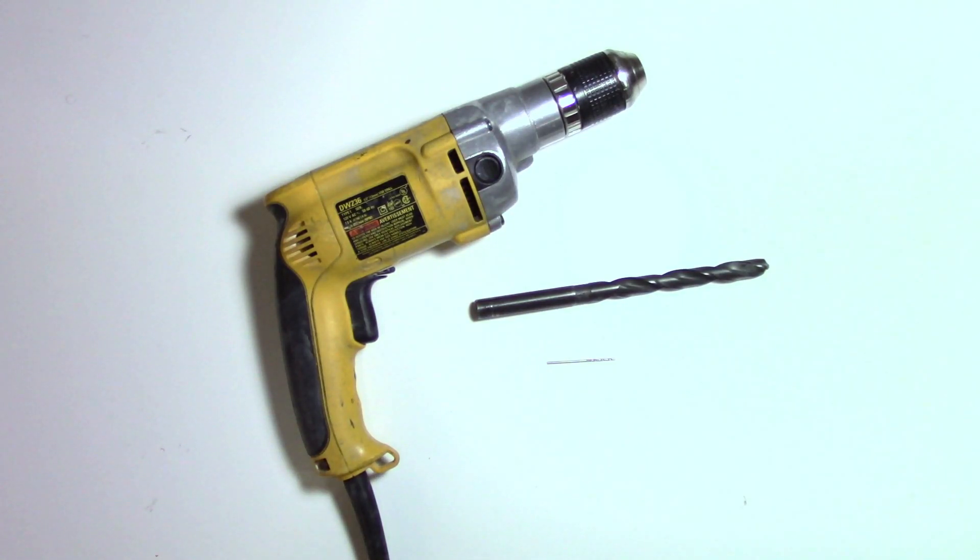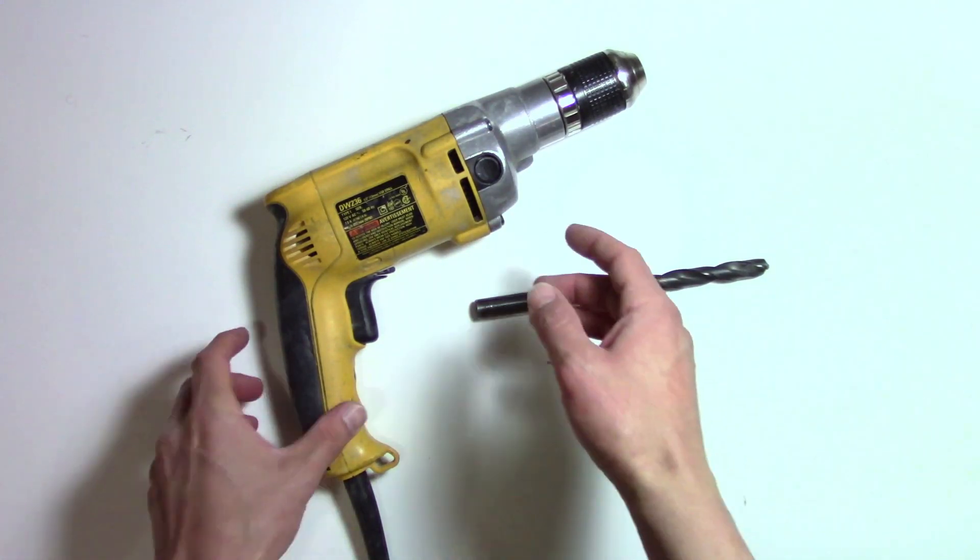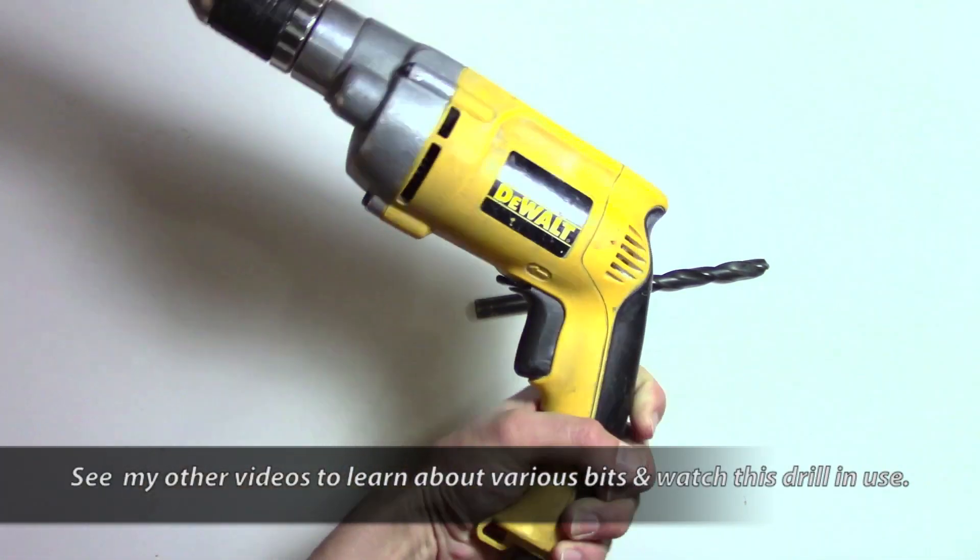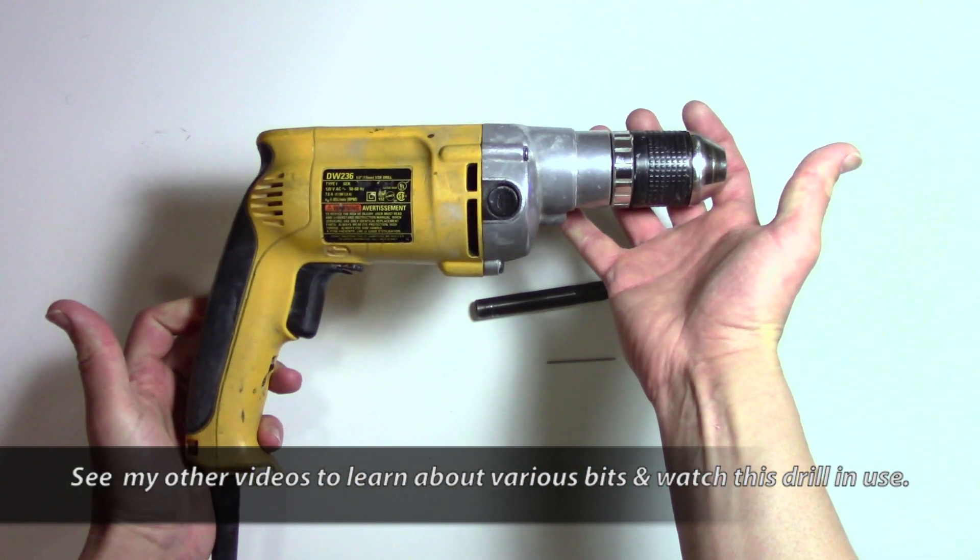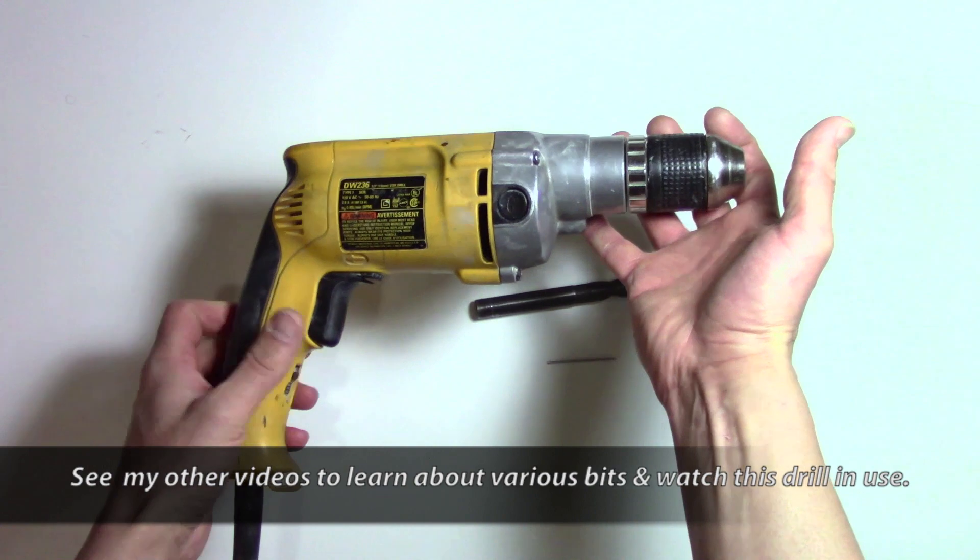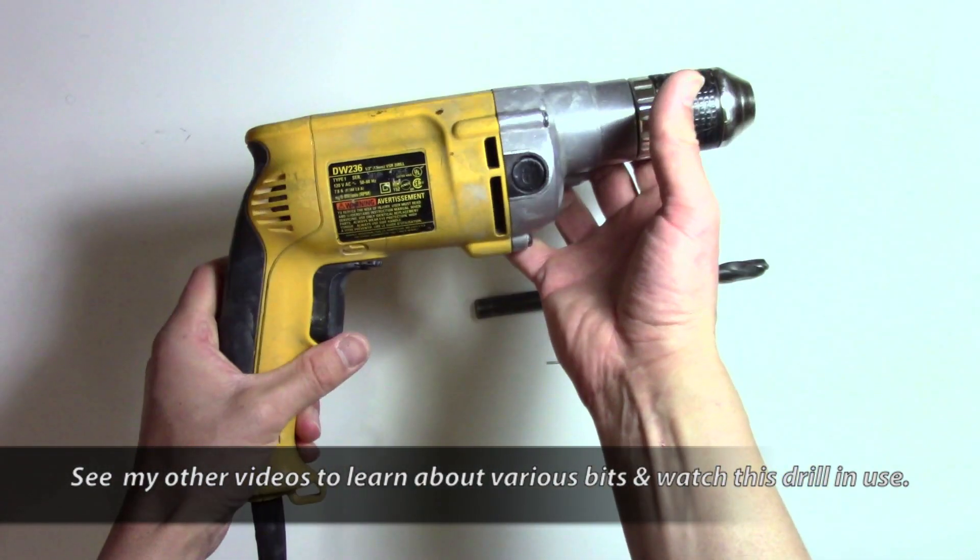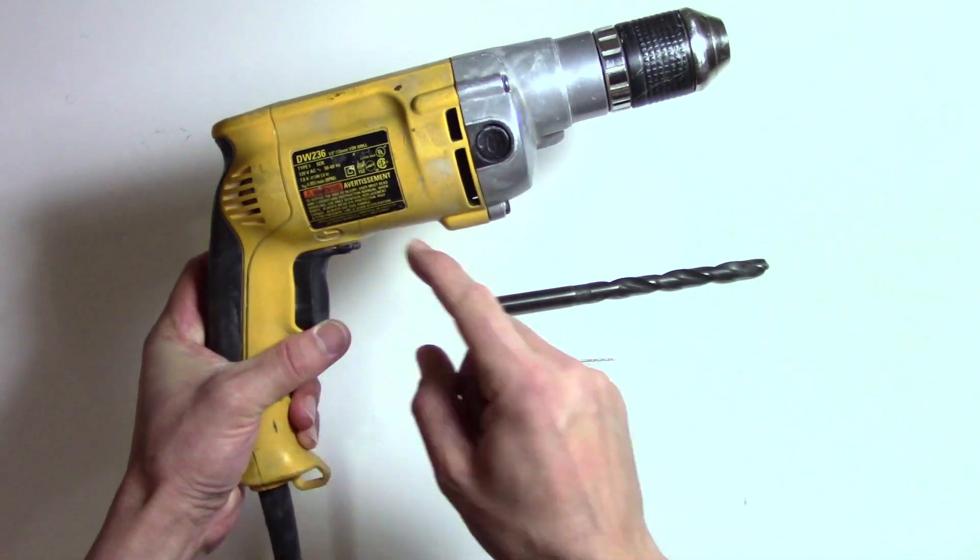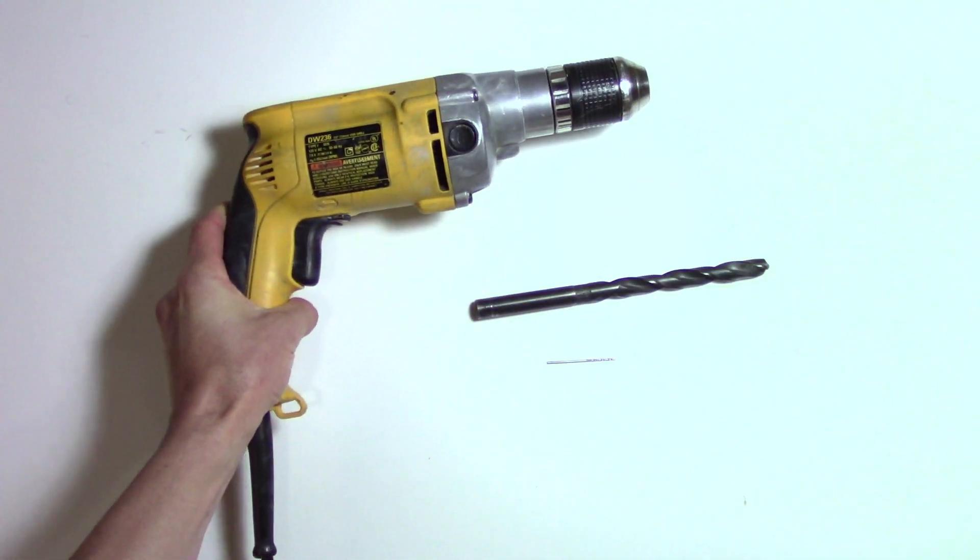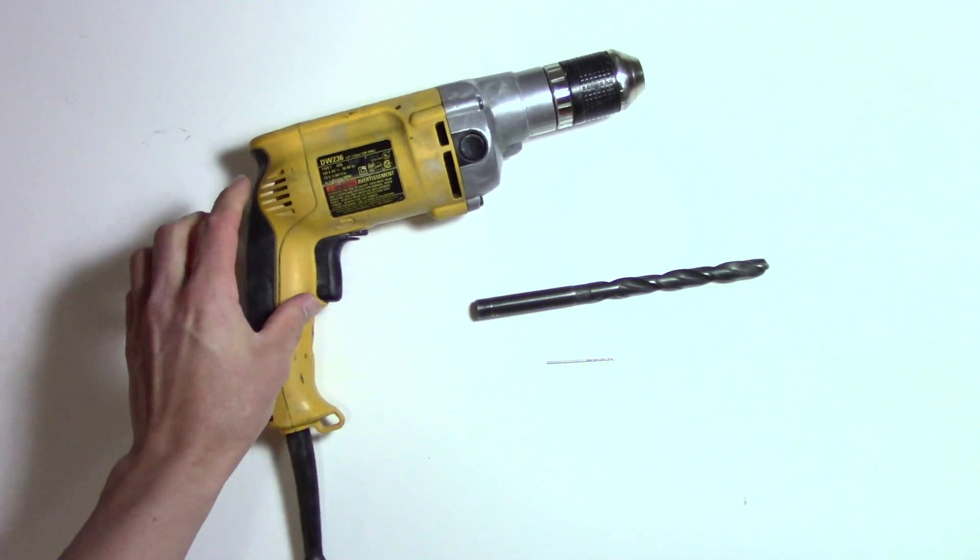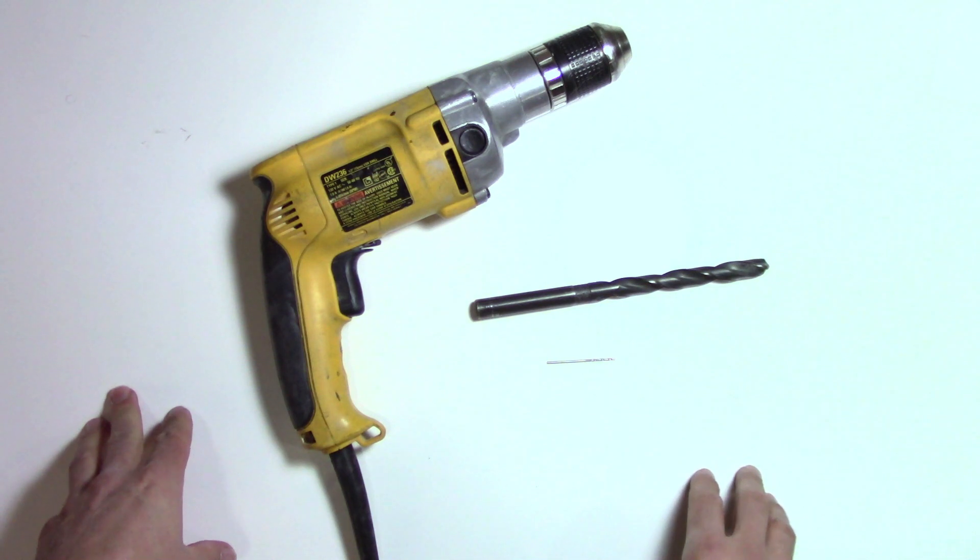In this video, I'm going to talk about what goes into a good drill. This drill I've been using for about 15, getting closer to 20 years now, and I've had no trouble with it at all. It's a DeWalt brand, actually number DW236. They don't sell this anymore, they sell the newer models, but a lot of the features that make this great are the same.